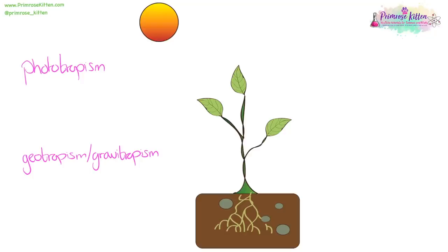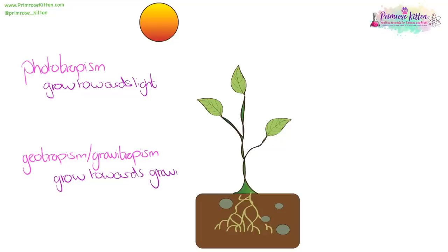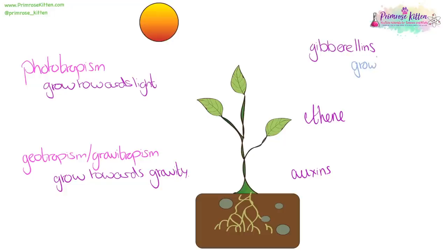Phototropism means something is going to grow towards the light. Geotropism or gravitropism means something is going to grow towards gravity, meaning your roots always go downwards and your shoots always go upwards. Gibberellins are important for growth. Ethene is important for ripening plants. And auxins are important for growth in the right direction.